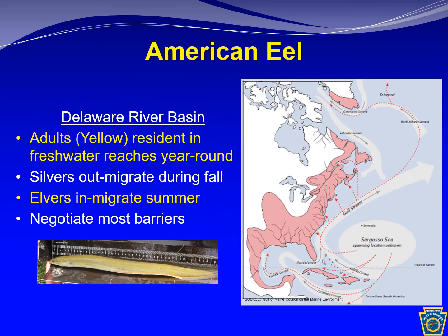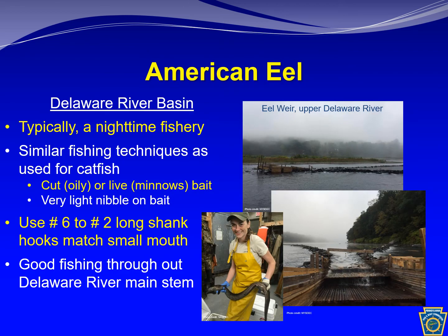American eel is the final migratory fish to focus on for this presentation. Adults are resident in freshwater reaches, returning to the Sargasso Sea for spawning, with the young then in-migrating during the summer as glass eels or elvers. Eels are well distributed throughout the Delaware River Basin as they are able to negotiate most barriers. American eel are typically a nighttime fishery as they emerge from the bottom substrate for feeding. Regulations are open to year-round fishing with a nine-inch minimum size and a 25-fish daily creel limit.